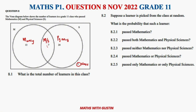Question 8.1 says: calculate the total number of learners in the class. The total would be the sum of everything on the Venn diagram, which is 13 plus 7 plus 24 plus 3, giving us a total sample space of 47.